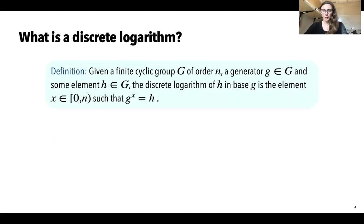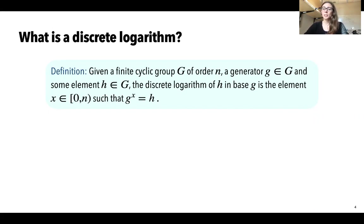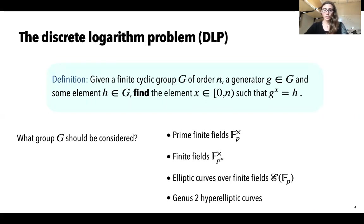So first of all, what is a discrete logarithm? The setup is quite simple. We are given a finite cyclic group G of some order n, a generator G of that group, and some element H in the group. The discrete logarithm of the target element H in base G is going to be the element X, the exponent, such that G to the X is equal to H.